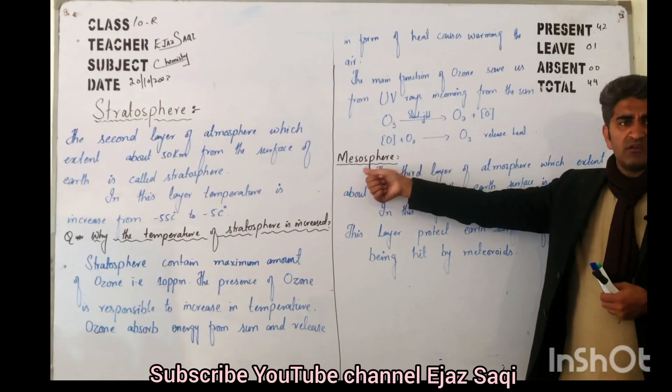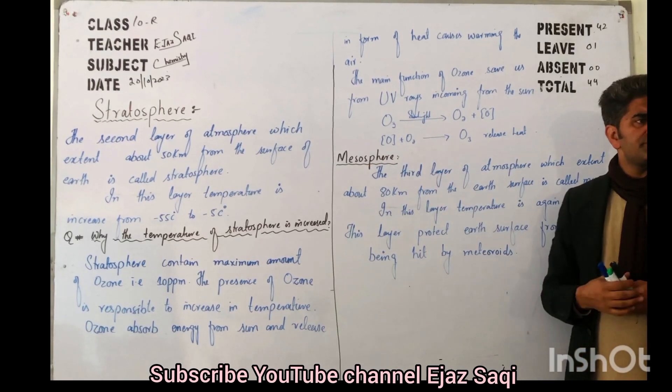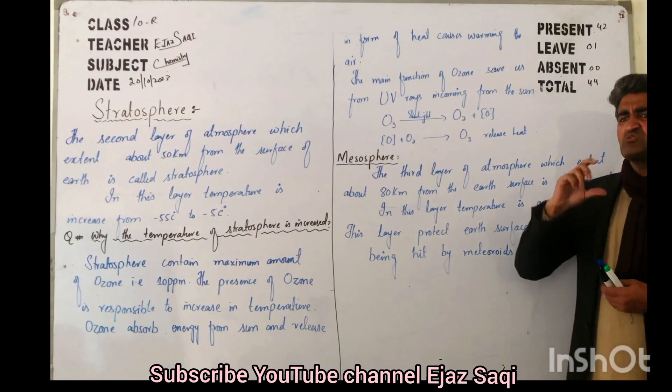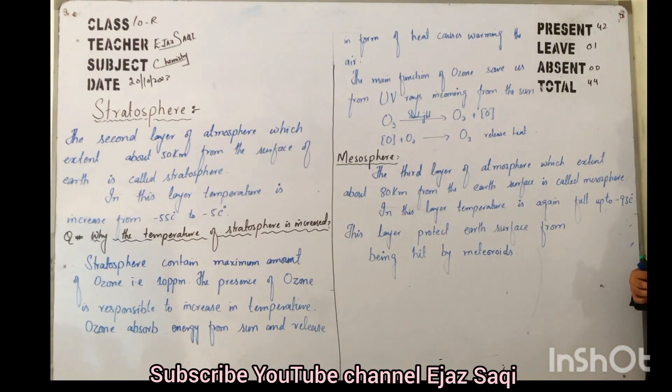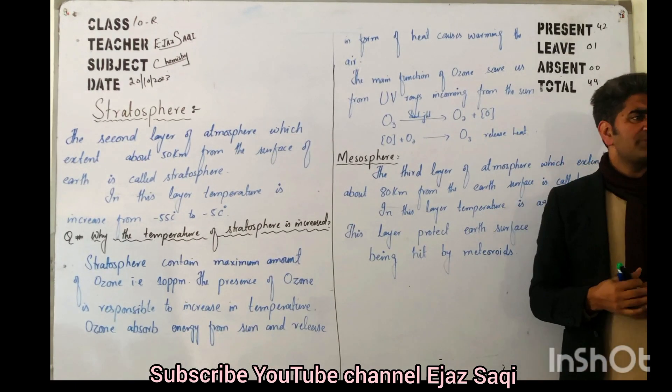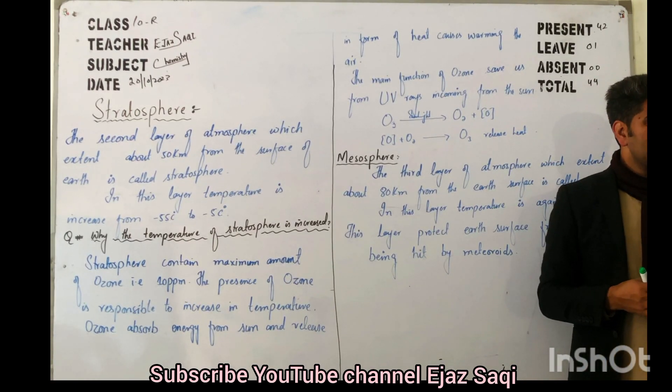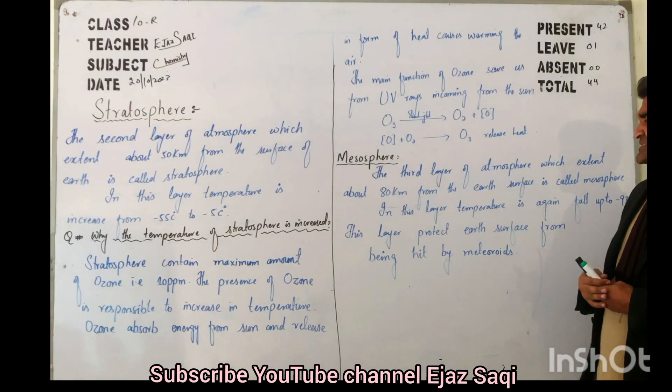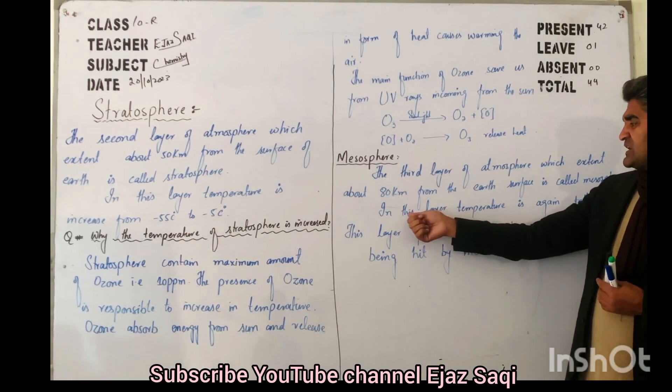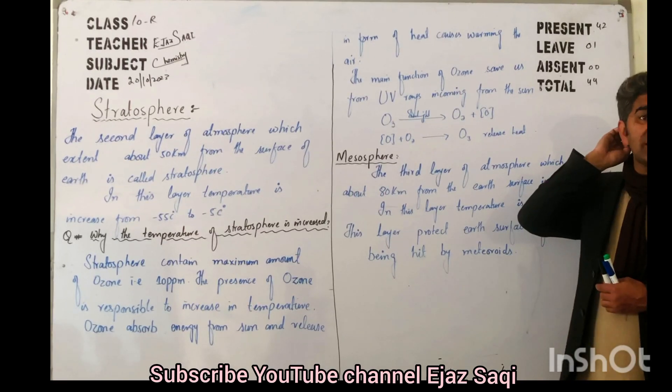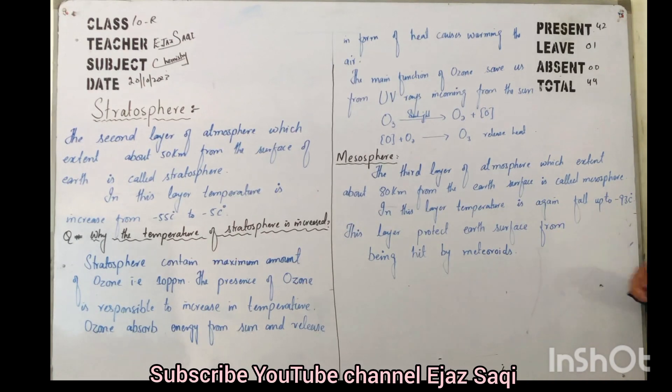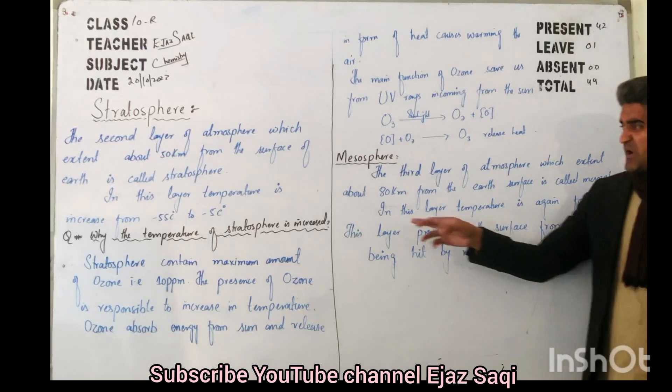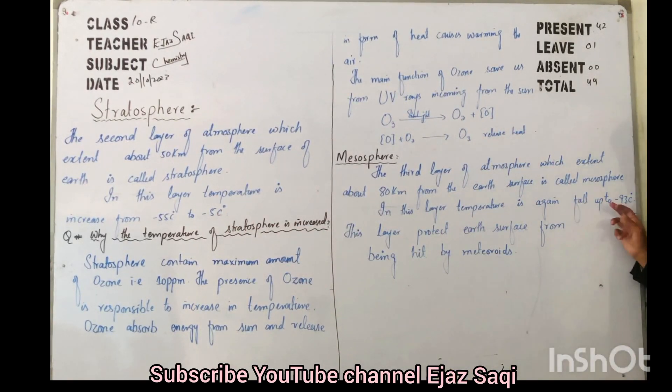The third layer of mesosphere. Mesosphere is the third layer of atmosphere which is 30 kilometers thick above Earth surface. The range is 80 kilometers above surface. In this layer, what happens? Now see, in this layer what happens? Temperature again falls. Again decreases. It was at minus 5, now it reaches minus 93.